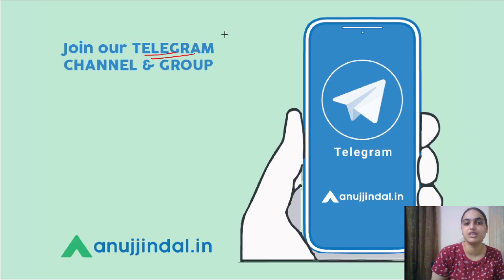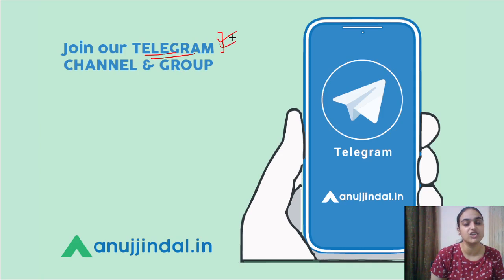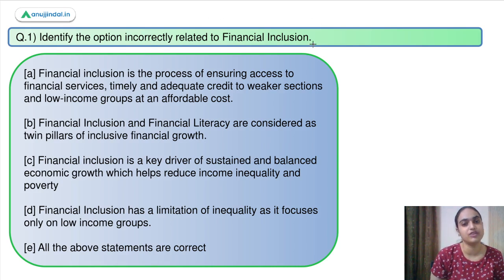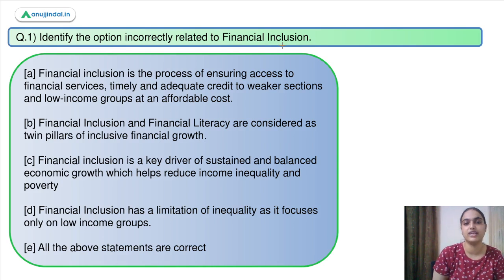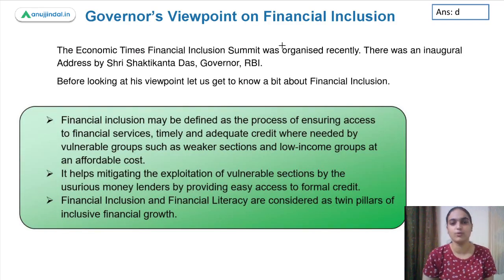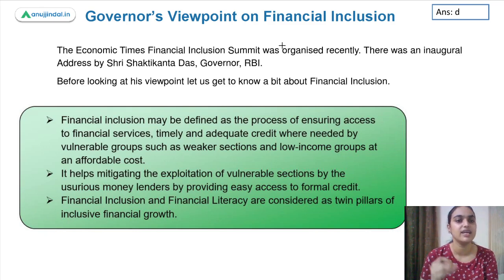In our Telegram group, we share free quizzes and post all updates related to our upcoming sessions. Moving on to question number one: identify the option incorrectly related to financial inclusion. There are a few statements related to financial inclusion and we have to identify the incorrect one. Let me discuss the concept first and then come back to these options.